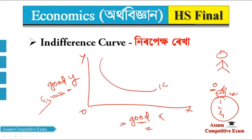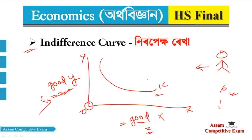So the name of the indifference curve — the definition is: the indifference curve is a locus of combinations of two goods, good X and good Y, which gives the same level of satisfaction to the consumer. This consumer will have the same community consumption and the same satisfaction.